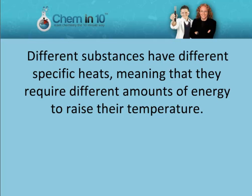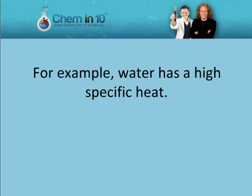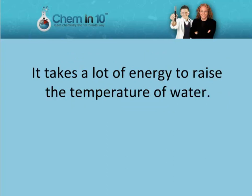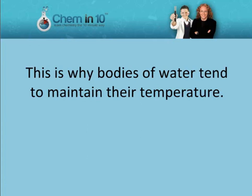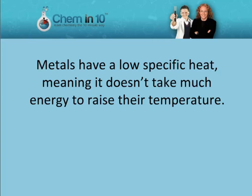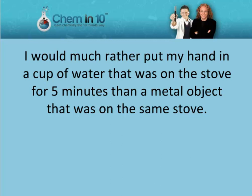Different substances have different specific heats, meaning that they require different amounts of energy to raise their temperature. For example, water has a high specific heat — it takes a lot of energy to raise the temperature of water, which is why bodies of water tend to maintain their temperature. Metals have a low specific heat, meaning it doesn't take much energy to raise their temperature. I would much rather put my hand in a cup of water that was on the stove for five minutes than a metal object that was on the same stove.